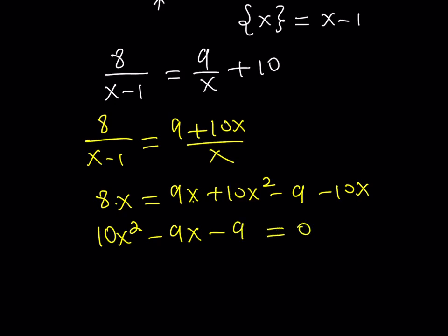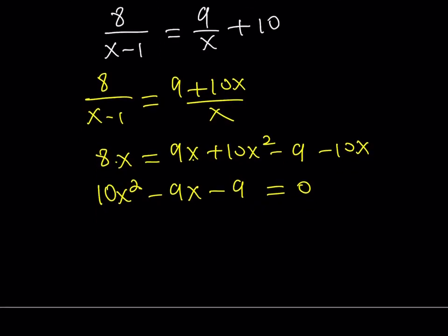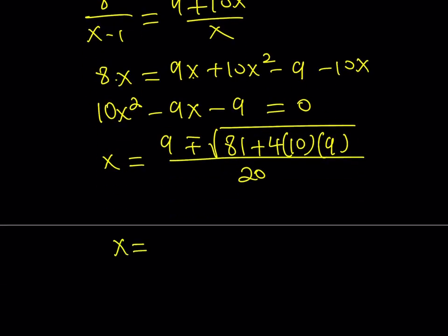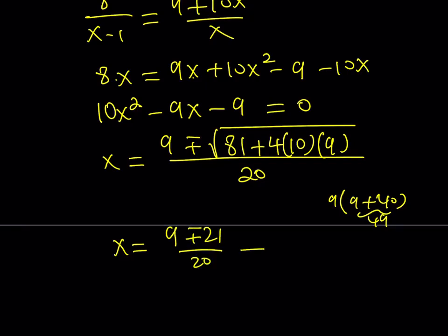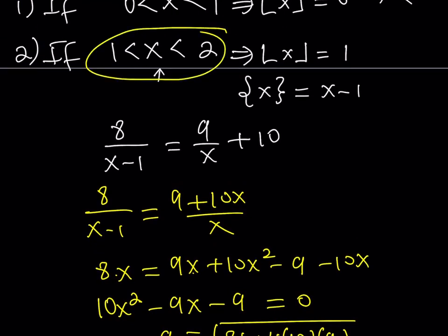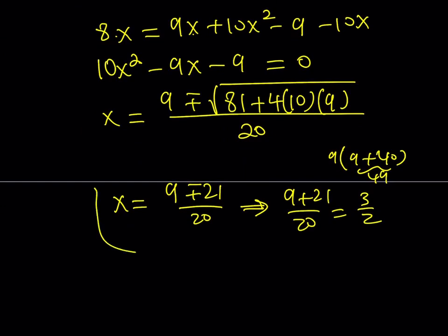Using the quadratic formula with a=10, b=−9, c=−9: the discriminant is 81 minus 4 times 10 times negative 9, giving 81 plus 360 equals 441, and the square root of 441 is 21. So x equals (9 plus or minus 21) over 20. The solution 9 minus 21 gives a negative answer — we don't want that. So x equals (9 plus 21) over 20, which is 30 over 20, equals 3/2. Since 3/2 is between 1 and 2, it satisfies our condition and is a valid solution.